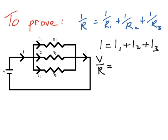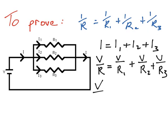However, the resistances are going to be R1, R2, and R3. So instead of I1, I2, and I3, we're going to have voltage divided by R1 plus voltage divided by R2 plus voltage divided by R3. Looking at this equation, we have a common factor on the right-hand side, which is just the voltage. So we have V over R on the left-hand side, and we factorize out the voltage on the right-hand side, leaving inside the bracket 1 over R1 plus 1 over R2 plus 1 over R3.